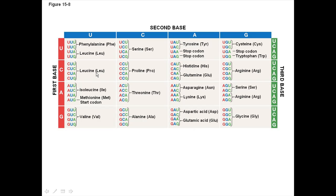One thing to point out about this table is that one of the codons, AUG, is considered to be a start codon. Translation begins whenever the cell runs across this AUG codon. AUG encodes for methionine, and AUG also happens to be the start codon. So the very first amino acid in all proteins that a cell makes initially is methionine. Cells can eventually take off that methionine and replace it with something else, but when a protein is first built, all proteins have methionine at the beginning — because AUG signals where translation should begin. That's why it's called the start codon.